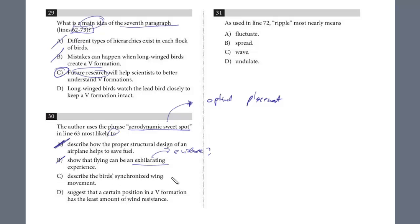Describe the bird's synchronized wing movement? Remember, the sweet spot, what is the sweet spot? What is it, the effect of it? Suggests that certain position in the V formation has the least amount of wind resistance. That's what the sweet spot is. It's the optimal placement. It's D.